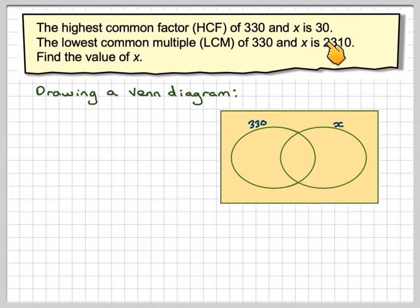We know the HCF is 30, so that 30 must go in the middle there because it's the highest common factor of both numbers. What number do we put here? Well, the number we put here is going to be 330 divided by 30, which gives me 11, because 11 times 30 gives 330.